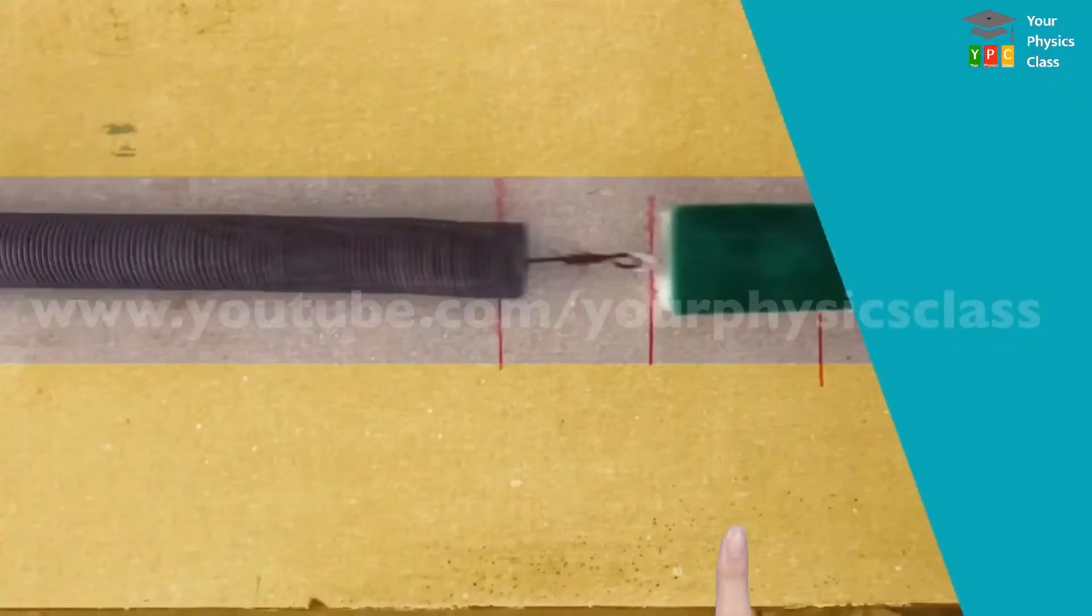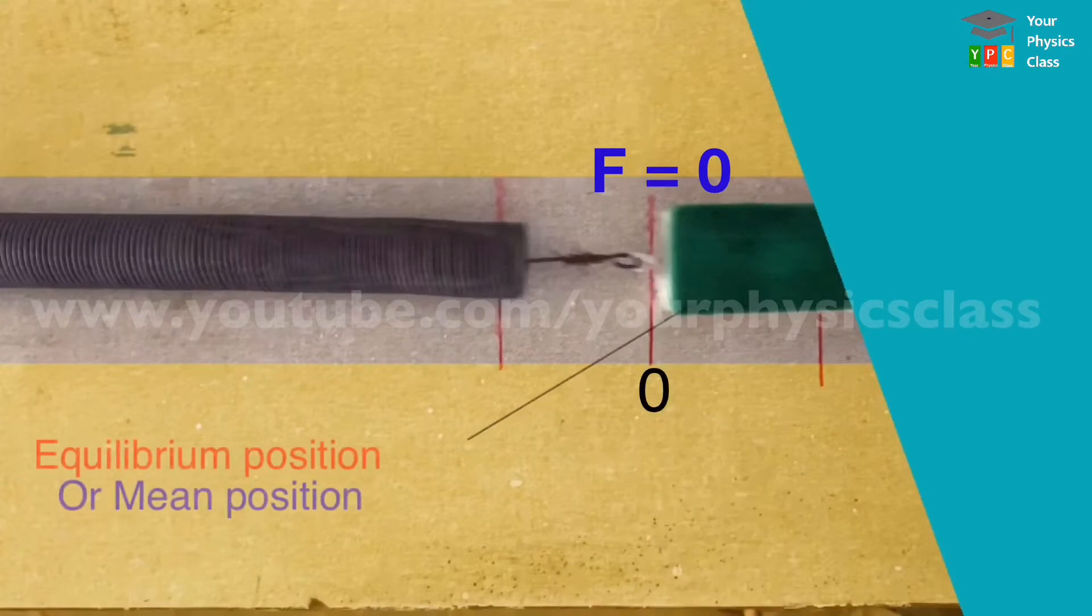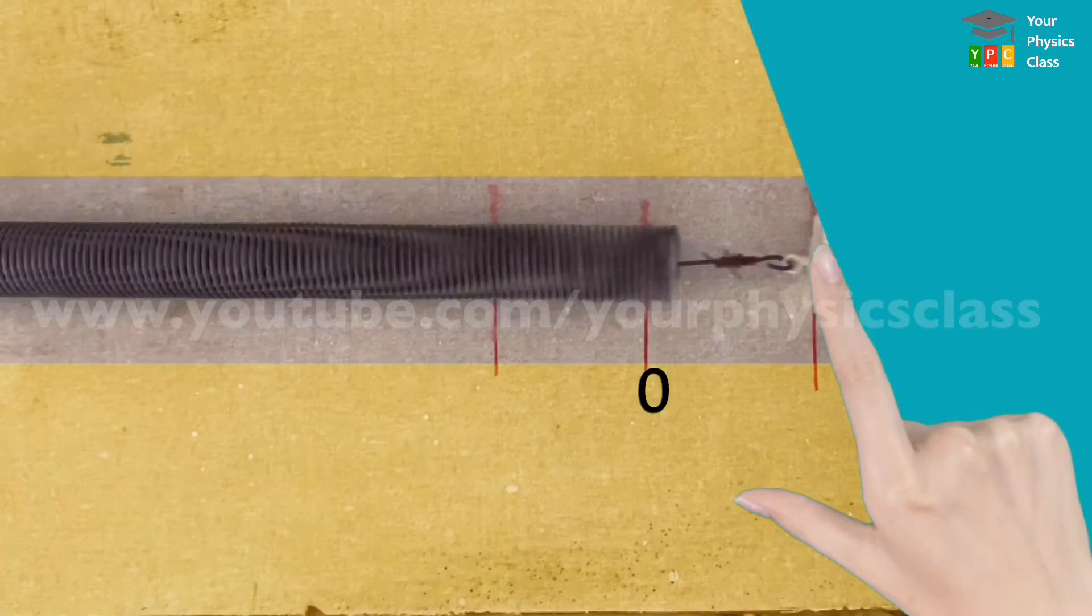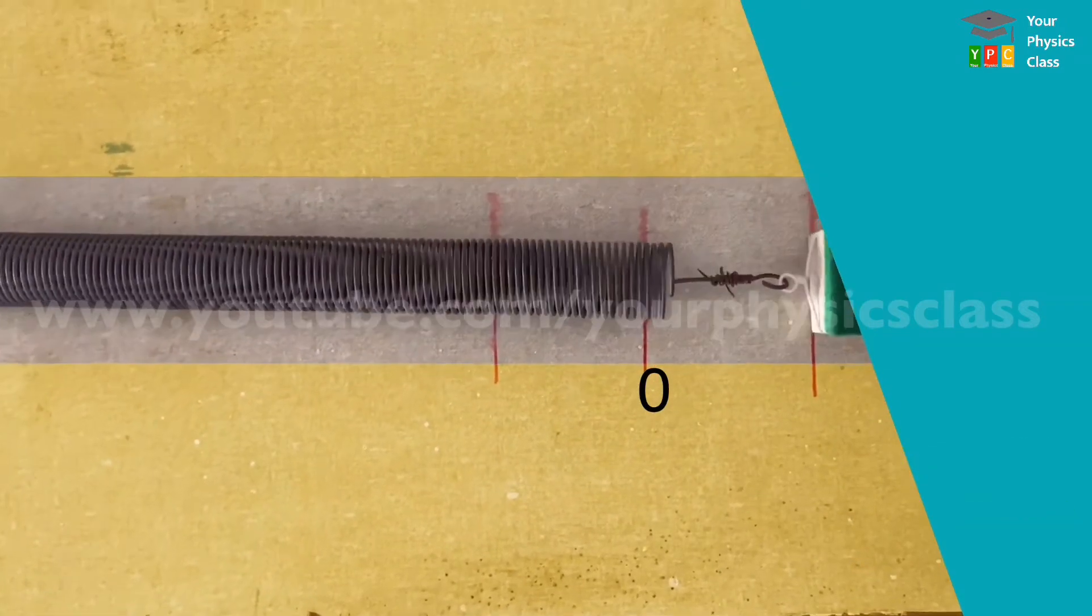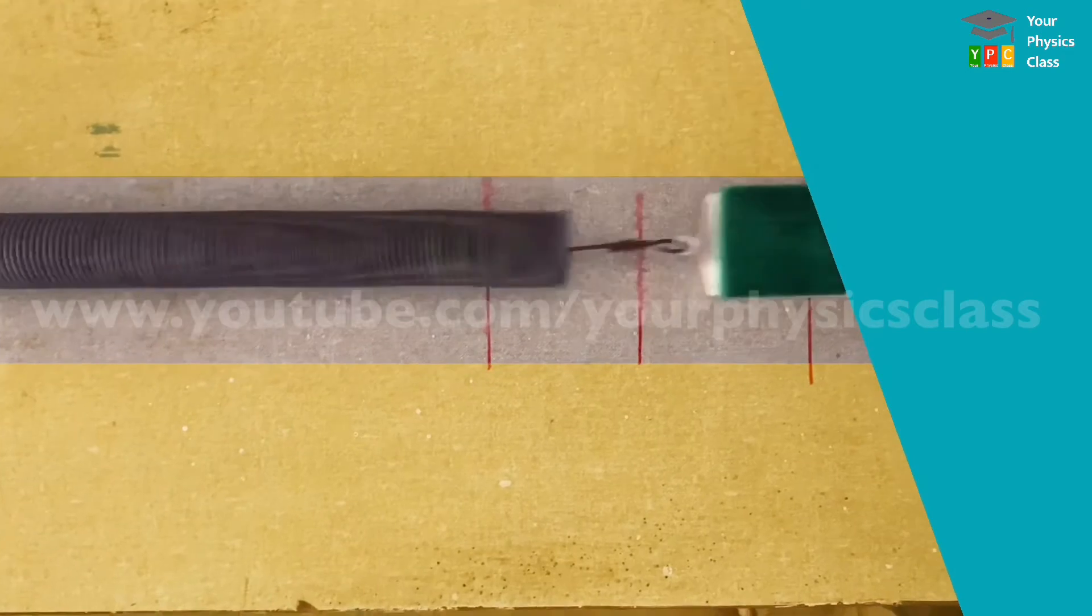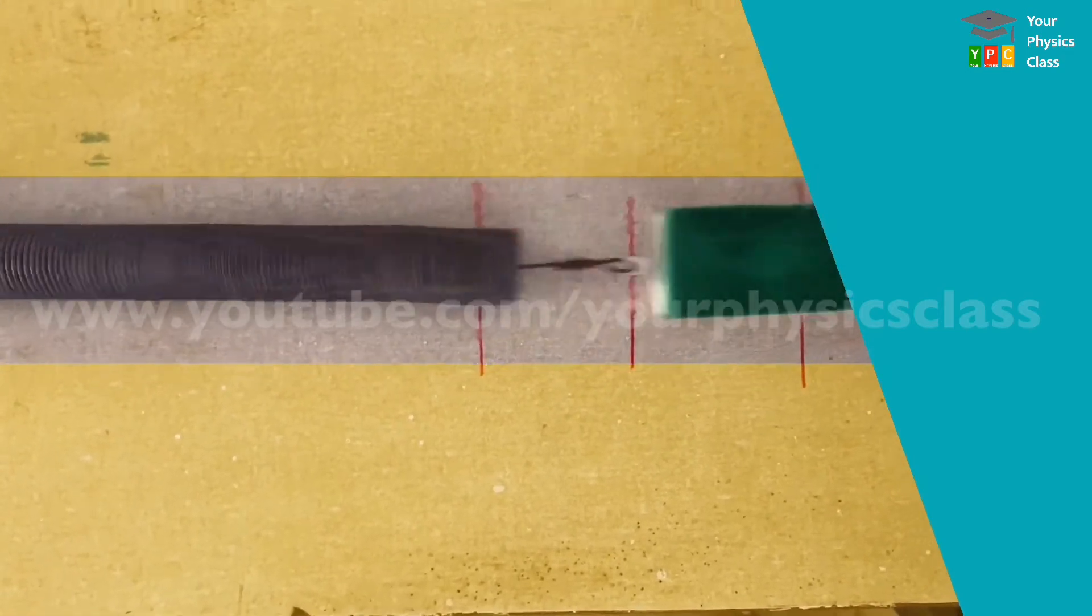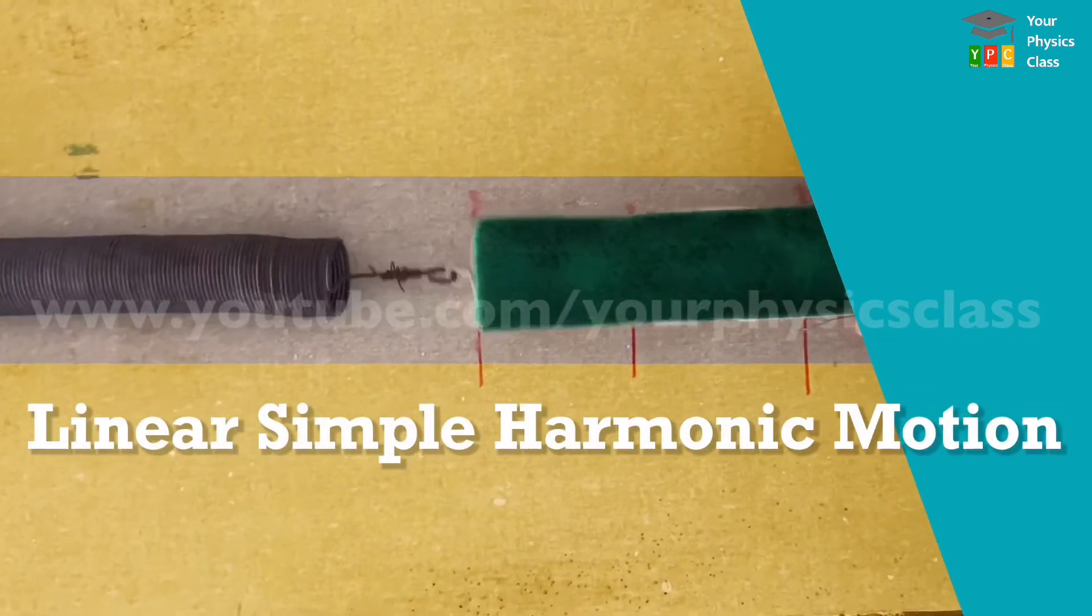Place rectangular block on a smooth frictionless horizontal surface. Fix one end of the spring to rigid wall and other end to block. The block is at some position where force by spring on the block is zero. This position is called equilibrium position. Pull the block of mass M to right and then release. The block will perform oscillatory periodic motion, that is linear simple harmonic motion.